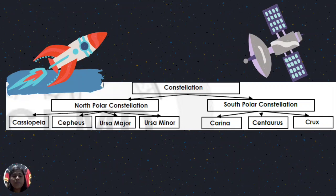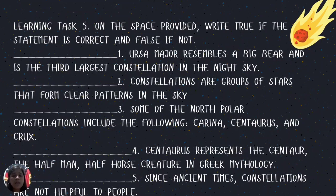To summarize our lesson on constellations: north polar constellations include Cassiopeia, Cepheus, Ursa Major, and Ursa Minor; south polar constellations include Carina, Centaurus, and Crux. For Learning Task Number 5, write True if the statement is correct and False if not. Statement 1: Ursa Major resembles a big bear and is the third largest constellation in the sky. Statement 2: A constellation is a group of stars that form clear patterns in the sky. Statement 3: Some north polar constellations include Carina, Centaurus, and Crux. Statement 4: Centaurus represents the centaur — the half-man, half-horse creature in Greek mythology. Statement 5: Since ancient times, constellations have not been helpful to people.